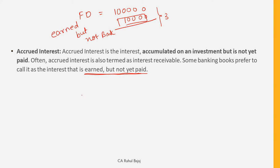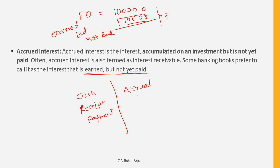In accounting, there are two systems: cash system and accrual system. The cash system says you record interest only when receipt or payment actually happens. The accrual system says you record when interest is earned or accrued, using the matching concept — allocating income or expense to the particular period it belongs to. So accrued interest is interest that has been earned by the customer but the bank has not yet paid it.